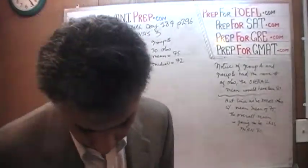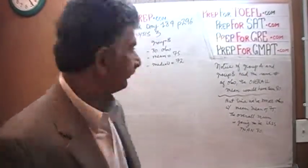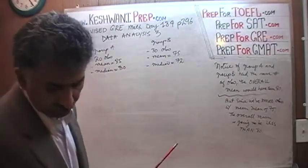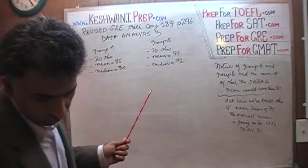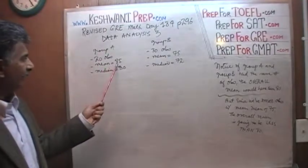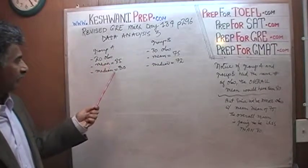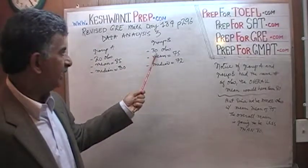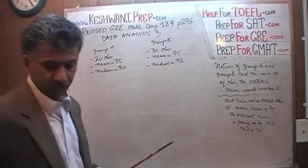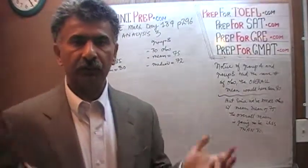Let's turn to page 296, problem number 3, data analysis 3. We are given two groups. Group A has 20 observations with a mean of 85 and a median of 80. Group B has 30 observations with a mean of 75 and a median of 72. The question is: what is the overall mean of these 50 observations put together?